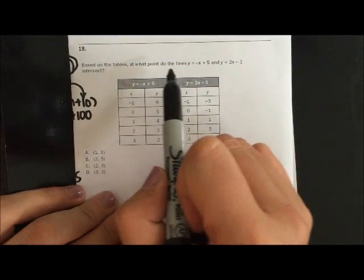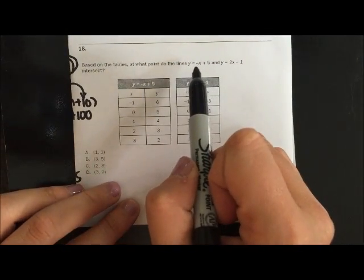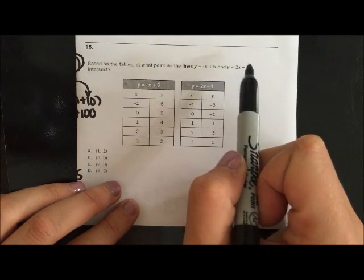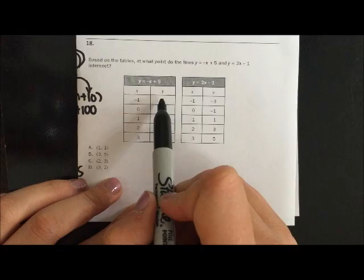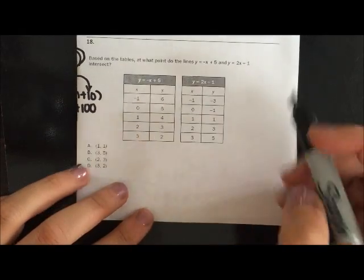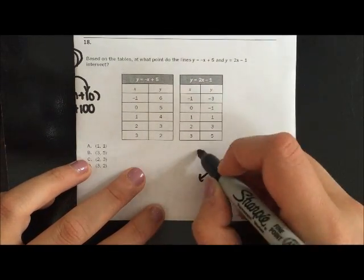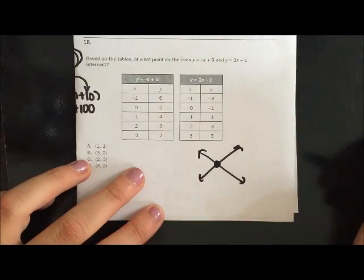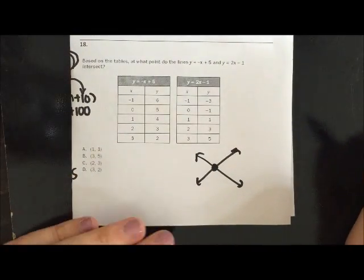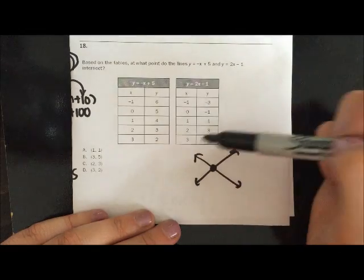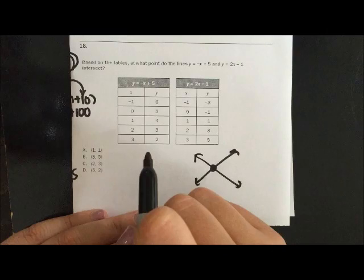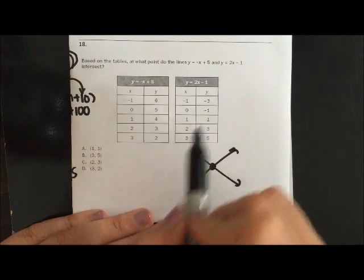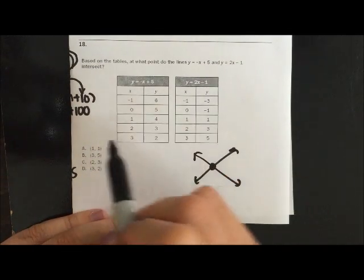And then number 18. Based on the tables, at what point does the line y equals negative x plus 5 and y equals 2x minus 1 intersect? So let's look at these tables. We want to know when they intersect. So they're going to have one point in common. Well, looking at this table, do they have any point in common? Well, negative 1, 6. Negative 1, 3. Nope. 0, 5. 0, negative 1. Nope. 1, 4. 1, 1. Nope.